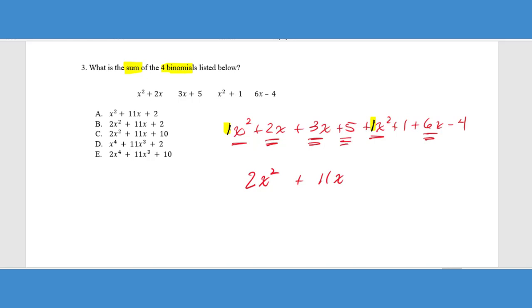And then lastly, we're looking for terms that don't have an X. So we have the 5, the 1, and the negative 4. So 5 plus 1 is 6, 6 minus 4 is a positive 2. And then we just look to match that answer up. So we have 2X squared plus 11X plus 2, and we can see that's answer choice B here.